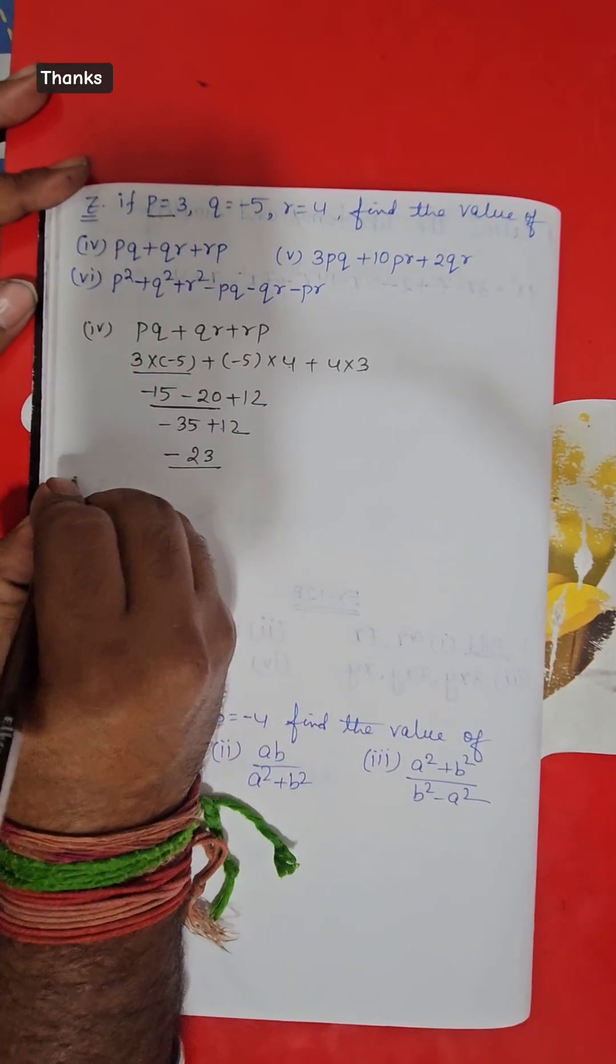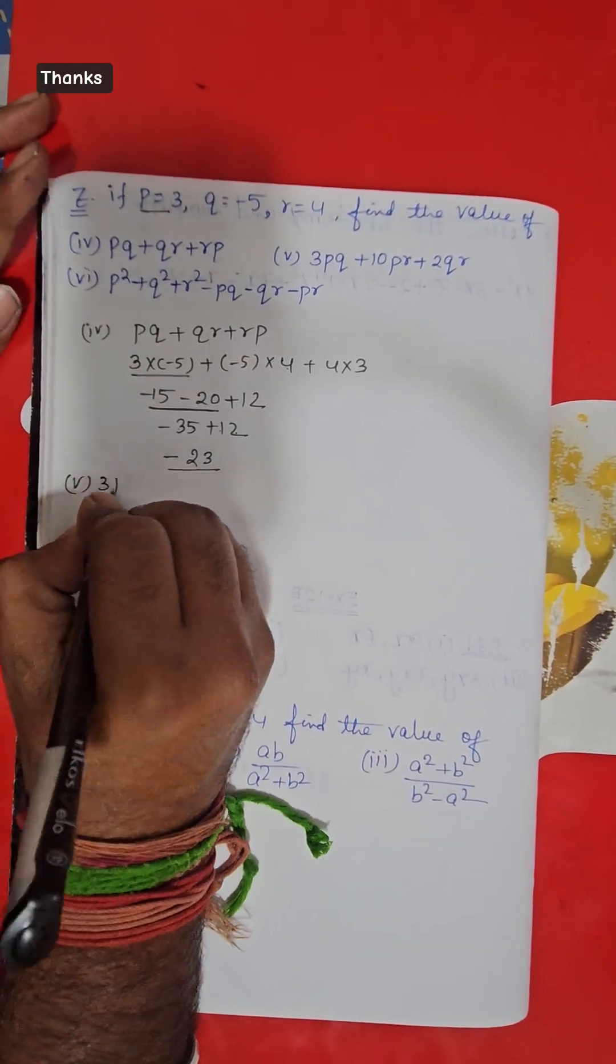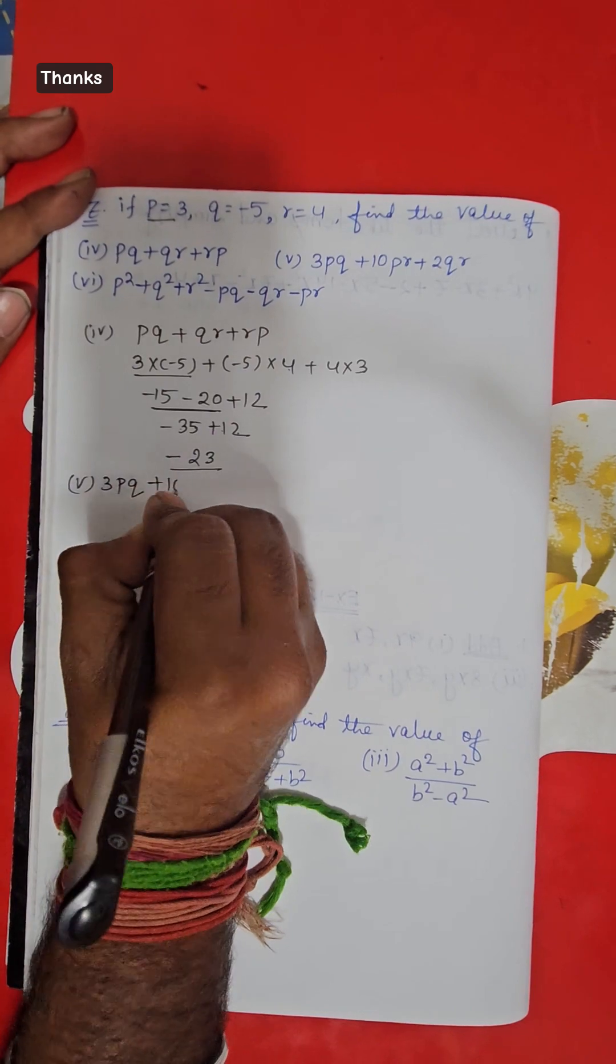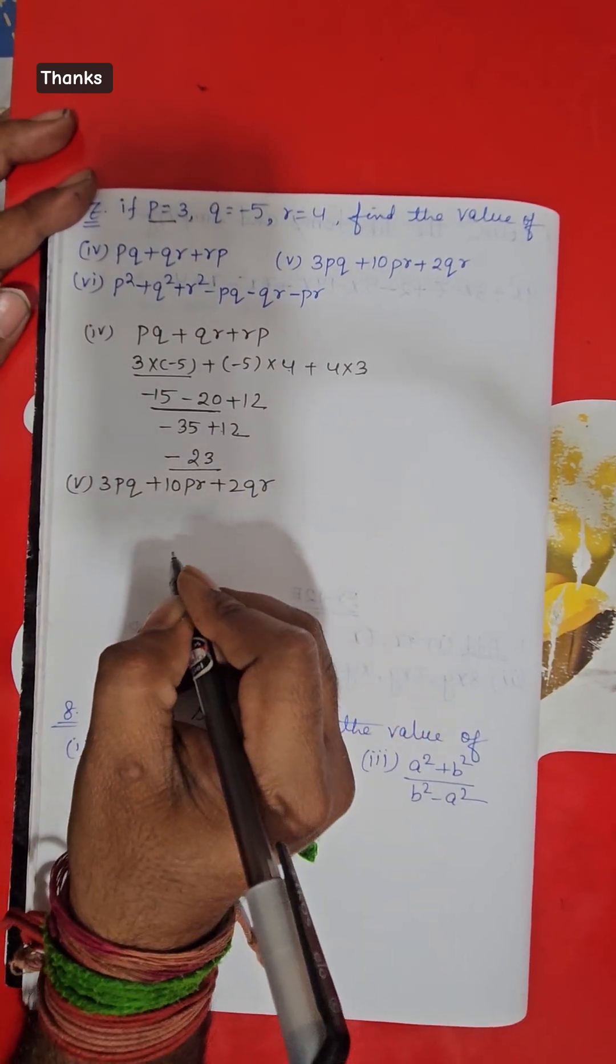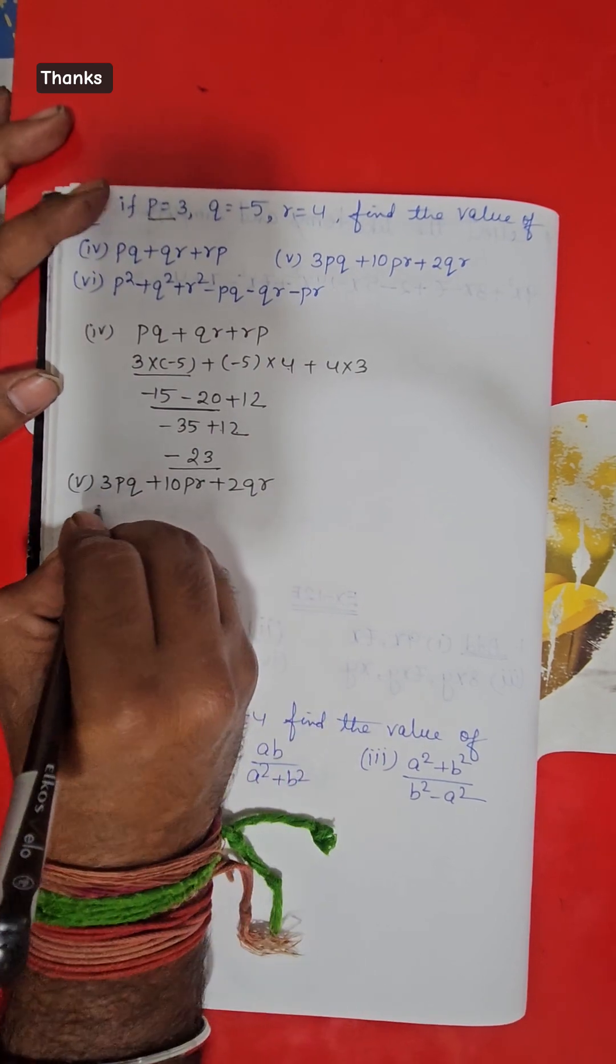Very good morning. Let's talk about the fifth number question. The question is 3pq plus 10pr plus 2qr. Here the value of p, q, r is given in this question. Let's just put the values.